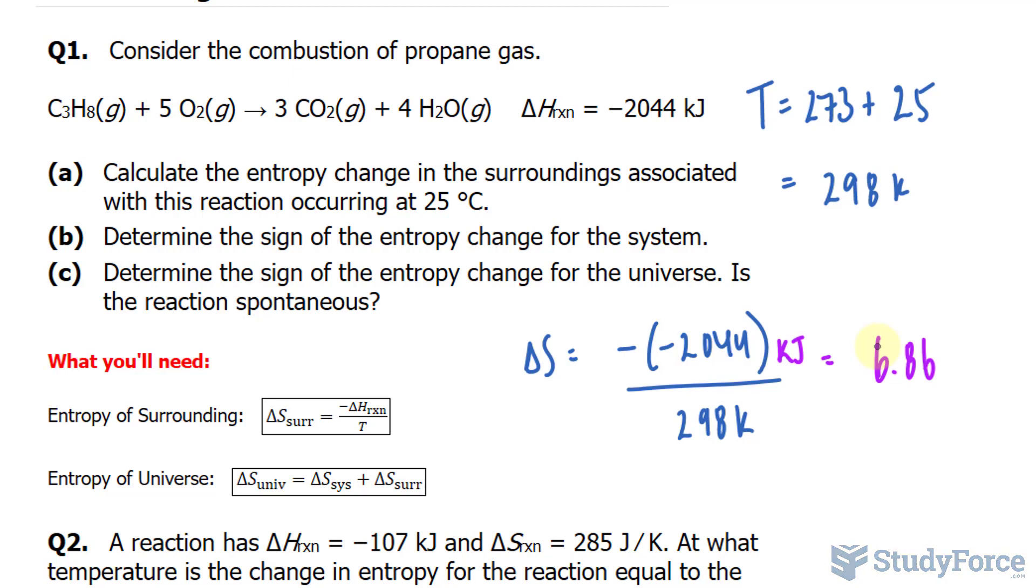Now, if you want it in joules per Kelvin, you multiply this by 1,000. So, I can even write times 10 to the power of 3 joules per Kelvin, and that is the surrounding entropy.